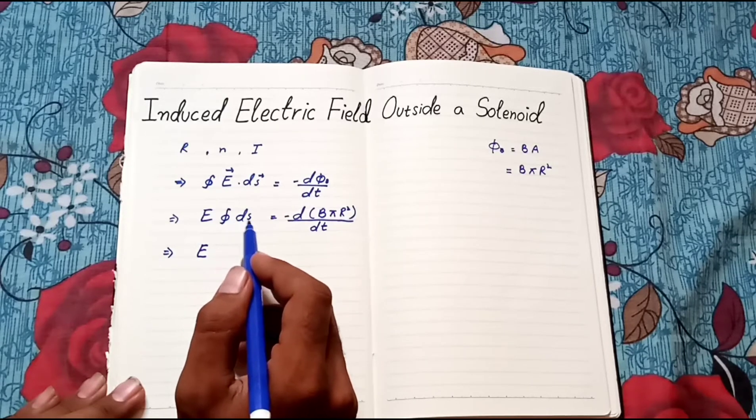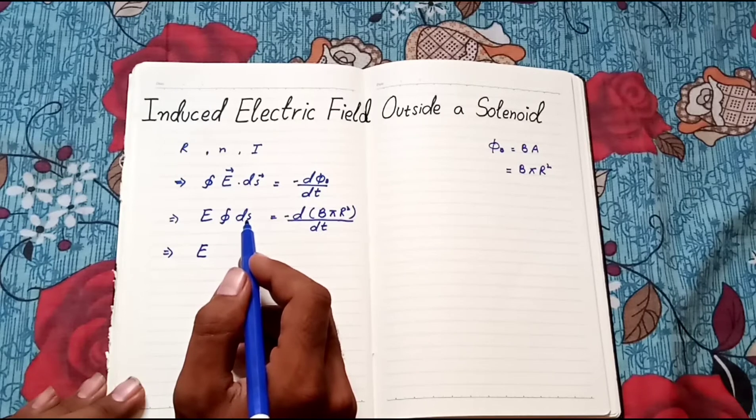Therefore, closed integral of ds is equal to circumference of wire which is 2 pi r.